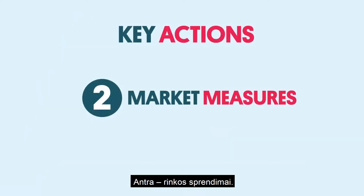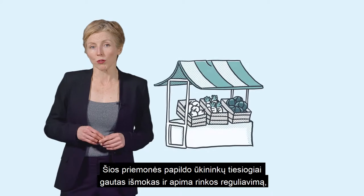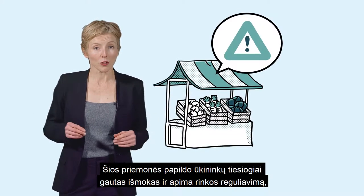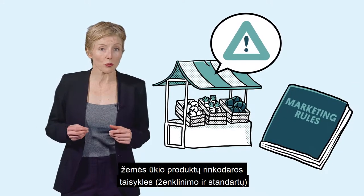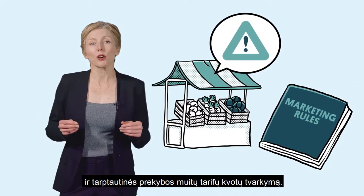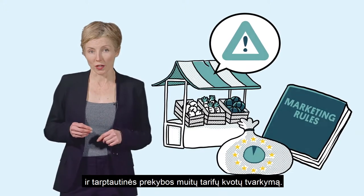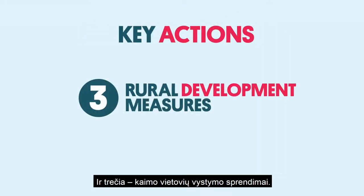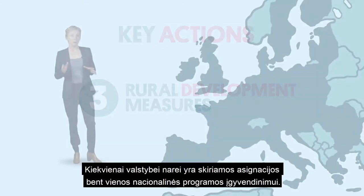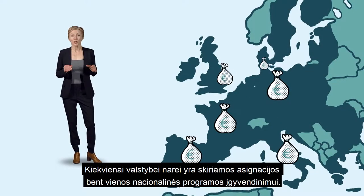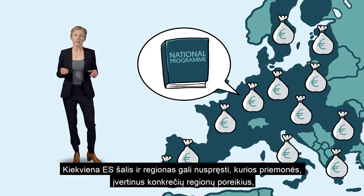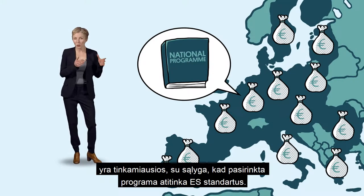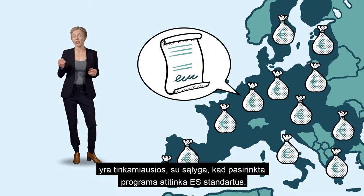Secondly, market measures. These complement the direct income support for farmers and include market intervention, a provision of sector-specific support, rules on the marketing of agricultural products such as labelling and standards, and the managing of tariff quotas for international trade. And thirdly, rural development measures. Each member state receives a financial allocation to implement at least one national programme. Each EU country and region can decide which measures are best based on their regional needs, under the condition that the chosen programme falls in line with EU standards.